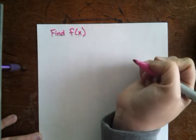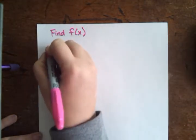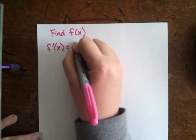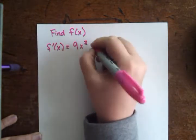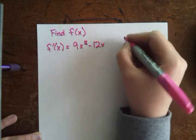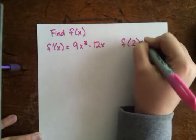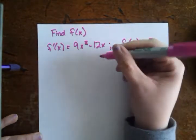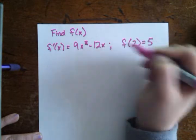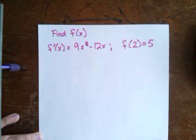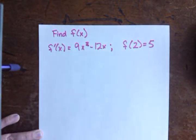They're asking us to find a function, and what they're giving us, they're telling us that f prime of x is equal to 9x squared minus 12x, and that f of 2 equals 5. So they're giving us two pieces of information. They're telling us what the derivative of f of x is. They're also telling us what one of the values of f of x is, and that's really all that we need to be able to figure out exactly what f of x is.